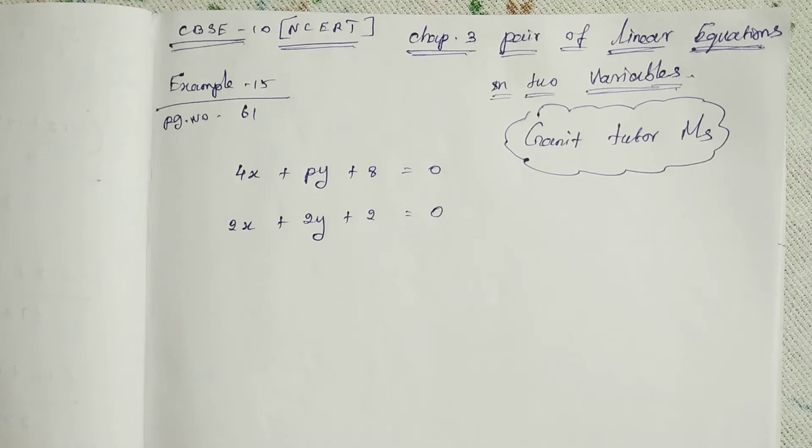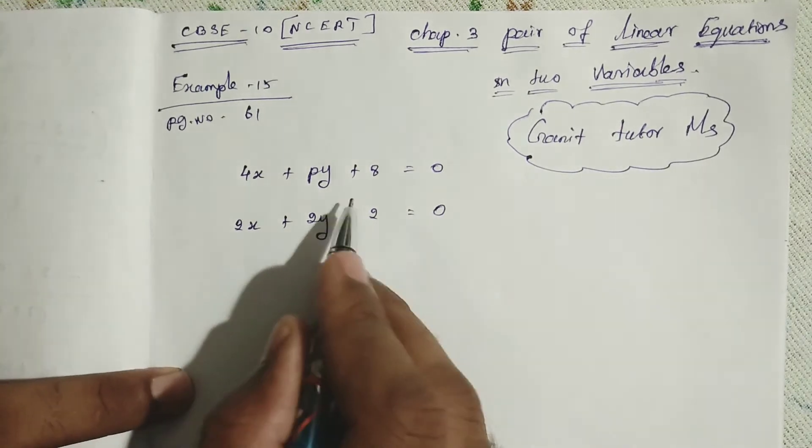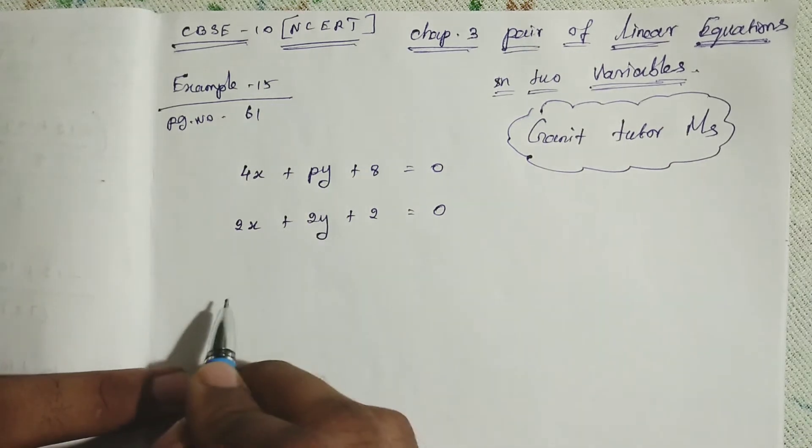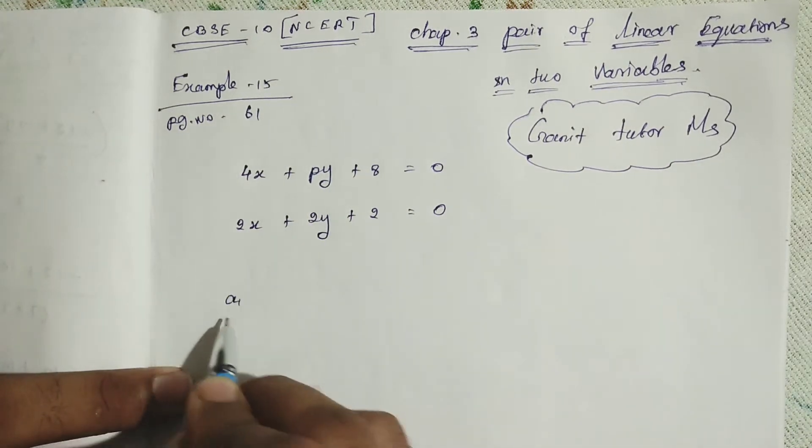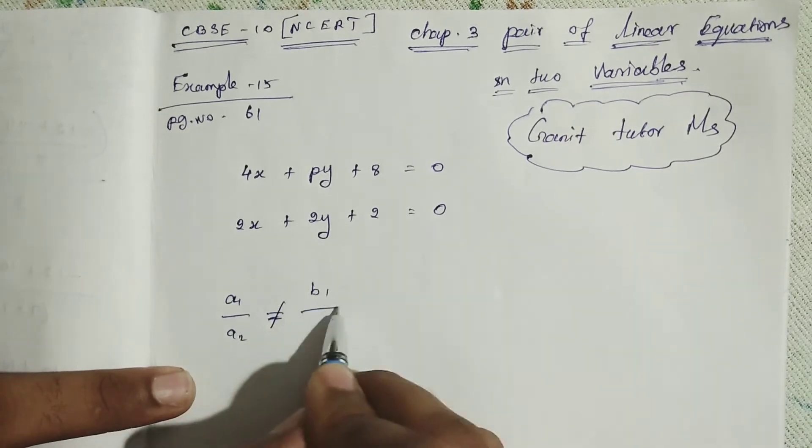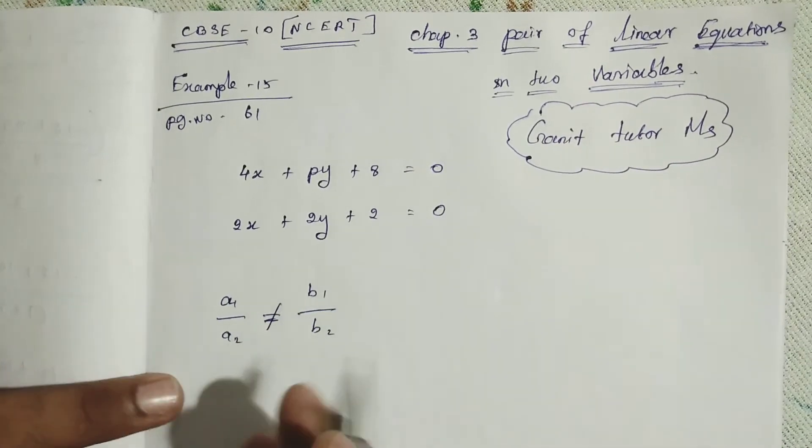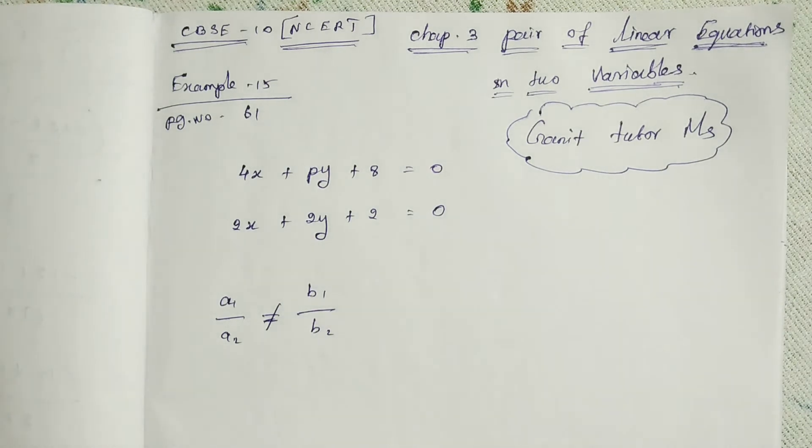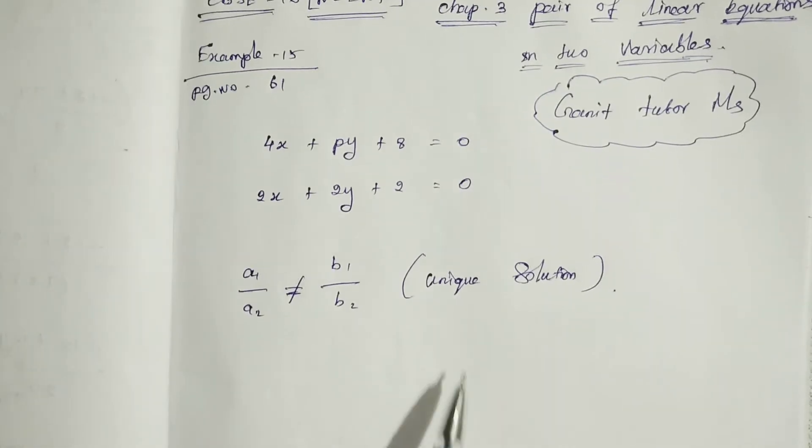On comparing the ratios, we know that for a unique solution, the pair of linear equations has this condition: A1 by A2, which is not equal to B1 by B2. Then the given pair of linear equations has a unique solution. Are you all clear? It is a unique solution.